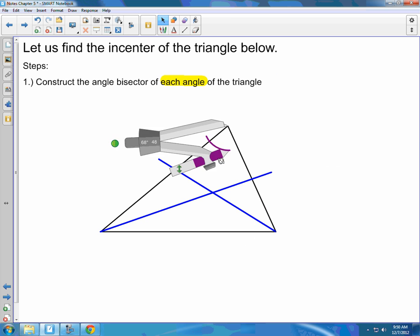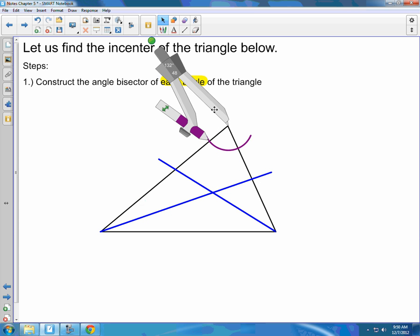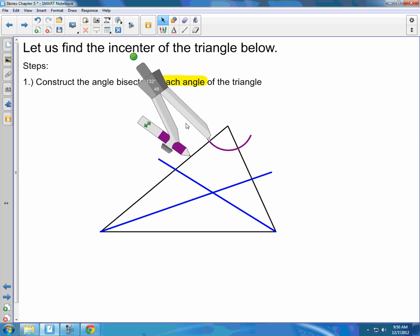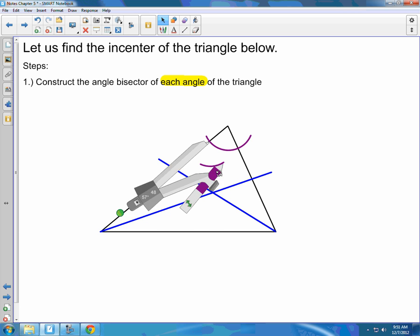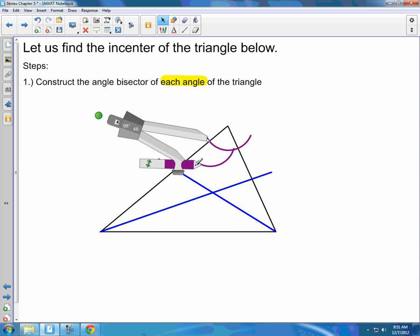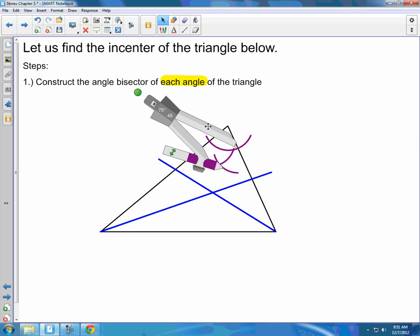Repeat the process. Again, that first arc is going to go through both sides. Center your compass on one of the intersection points. Draw an arc that goes inside of that angle. Repeat the process with the second intersection point. Again, don't change that opening of that compass. Keep it the same.